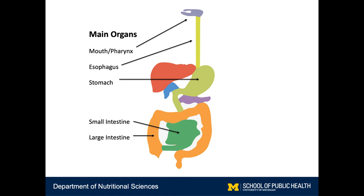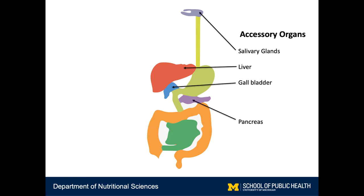The main organs consist of the mouth, the esophagus, the stomach, the small intestine, and the large intestine. These comprise the hollow tube I described before. Some of the important accessory organs include the salivary glands, the liver, the gallbladder, and the pancreas. Remember, these do not come in direct contact with the food, but instead secrete things into the main organs to allow for digestion.